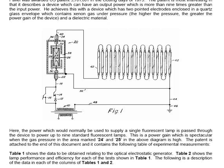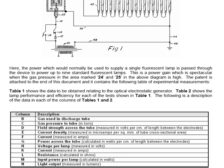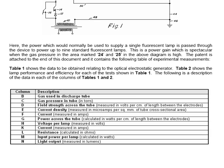Table 1 shows the data obtained relating to the optical electrostatic generator. Table 2 shows the lamp performance and efficiency for each of the tests shown in Table 1. The following is a description of the data in each of the columns of Tables 1 and 2.